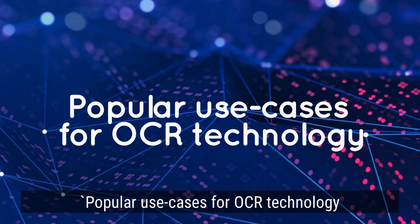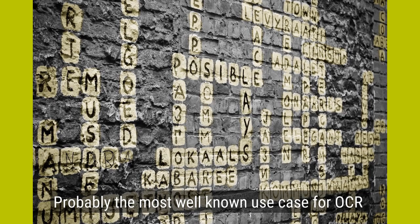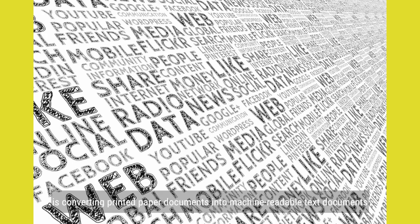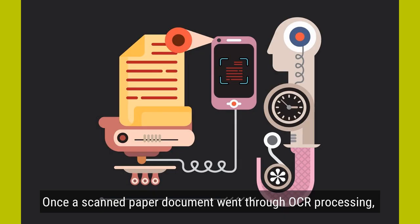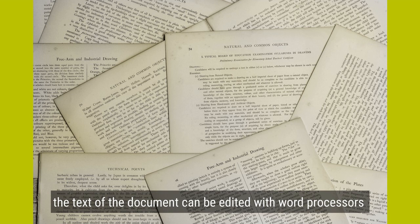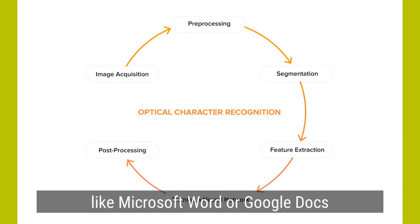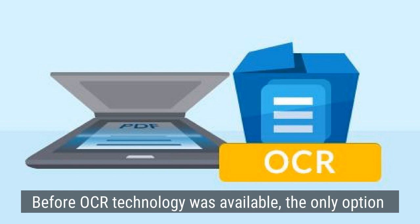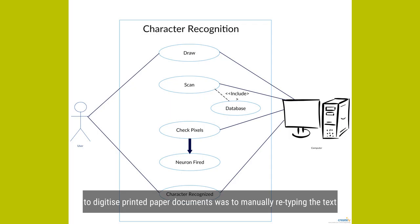The most well-known use case for OCR is converting printed paper documents into machine-readable text documents. Once a scanned paper document goes through OCR processing, the text can be edited with word processors like Microsoft Word or Google Docs. Before OCR technology was available, the only option to digitize printed paper documents was to manually retype the text — not only was this massively time-consuming, it also came with inaccuracy and typing errors.